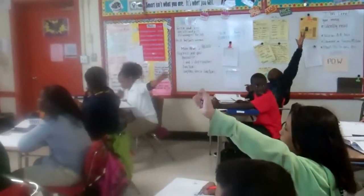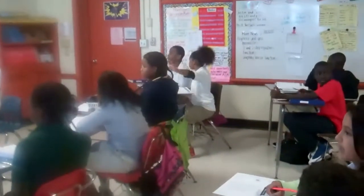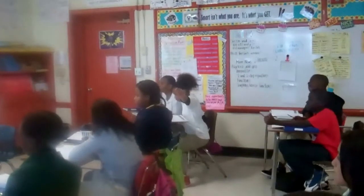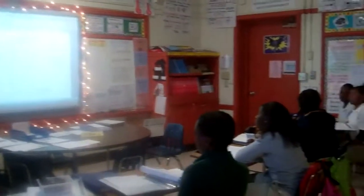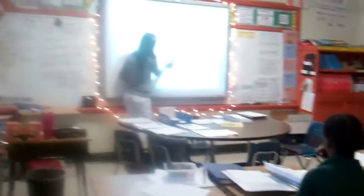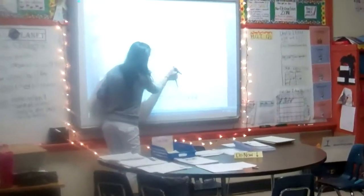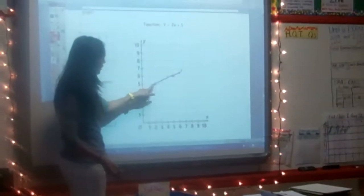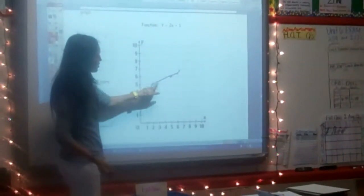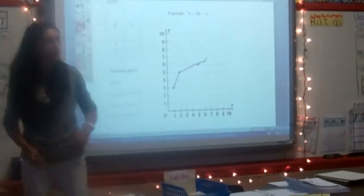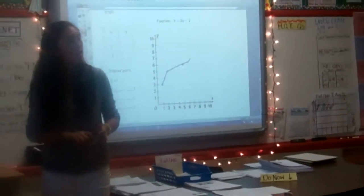Next step: the x tells me to go over, y tells me to go up. Then draw a line to connect the dots. What if I have my line and it looks like this — it's not straight? If your line changes direction, one of these points is messed up. You need to go back and plug it back into your function. Are there questions or are we good to try it?